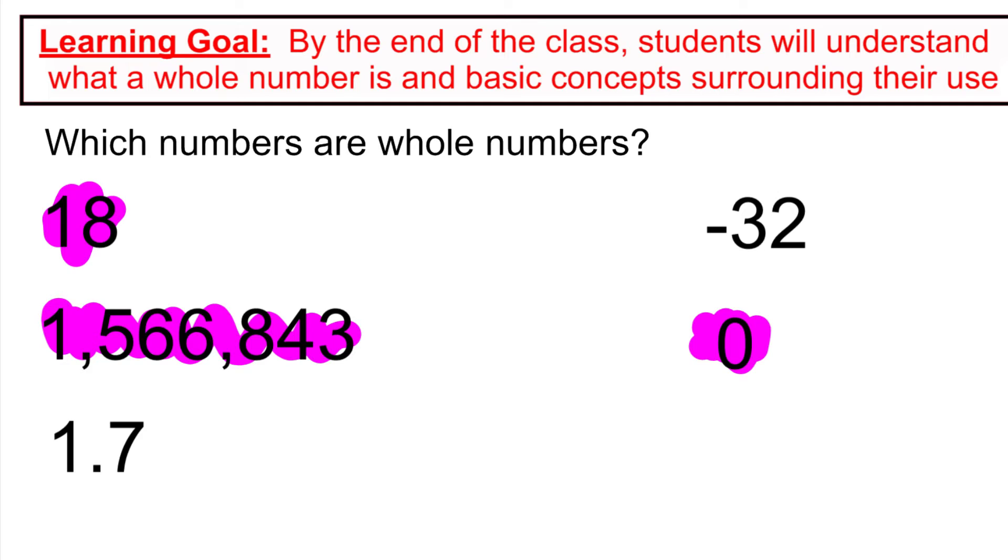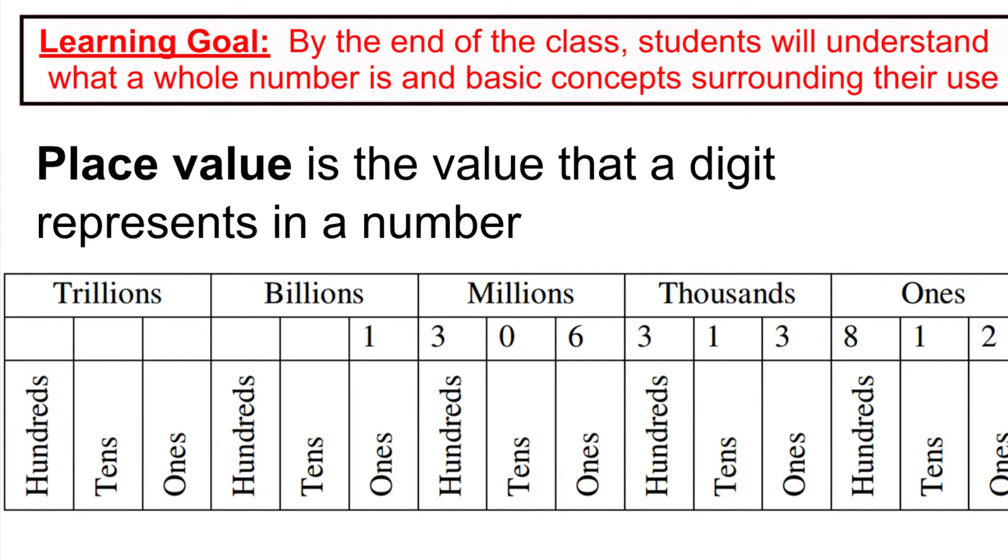So we're going to be starting off talking about how to handle just these specific types of numbers. We'll handle the negative numbers and the decimals and fractions at a later date. So we're going to talk about how to name a large number or even a smaller number. So any type of whole number, how do I assign it a name and how do I write about it?